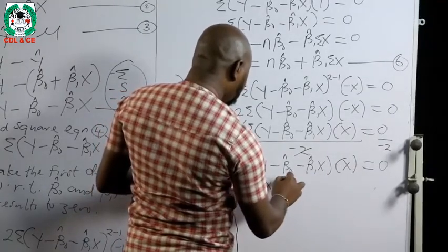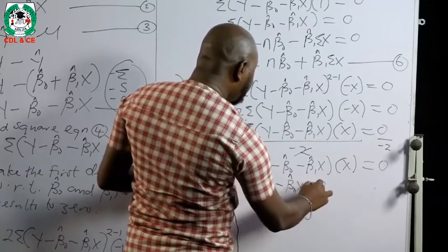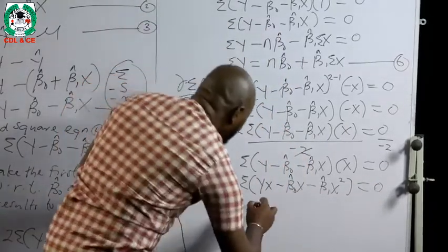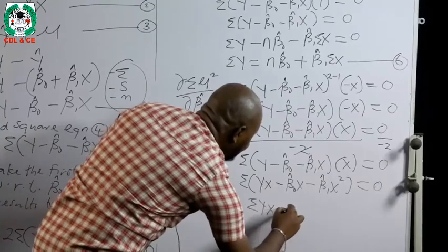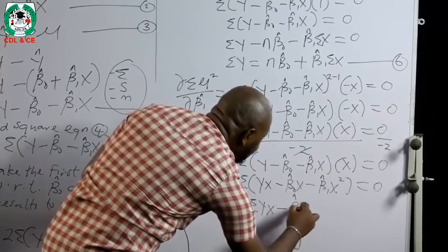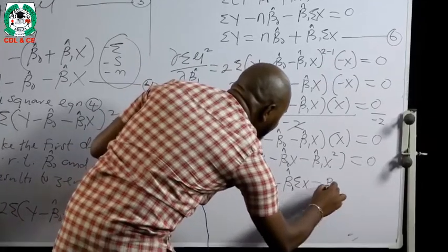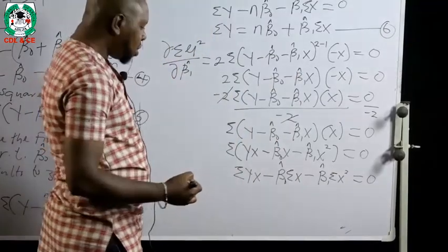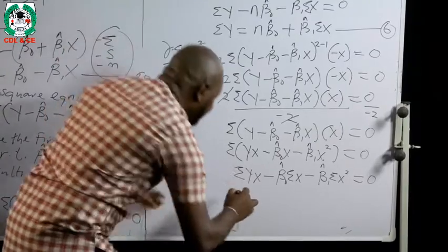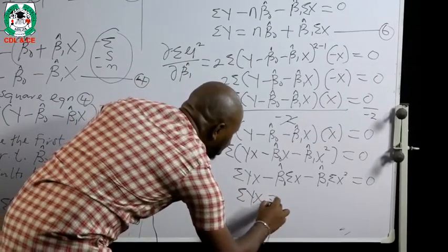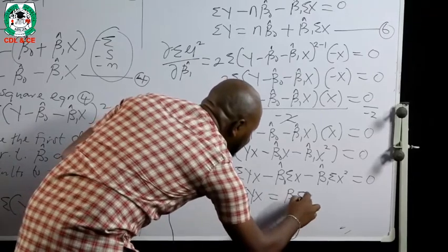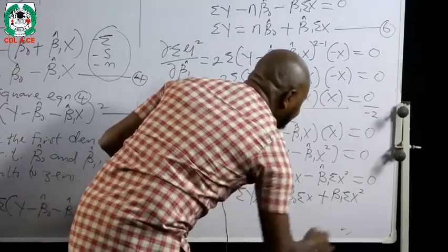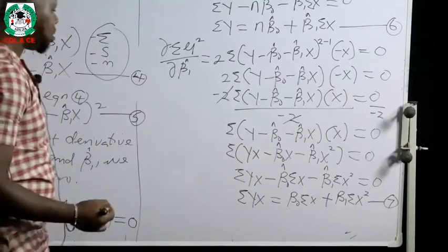Multiplying through by X: summation YX minus beta-naught estimate summation X minus beta-1 estimate summation X squared equals zero. Opening the bracket: summation YX minus beta-naught estimate summation X minus beta-1 estimate summation X squared equals zero. Making summation YX the subject: summation YX equals beta-naught estimate summation X plus beta-1 estimate summation X squared — call this equation seven.